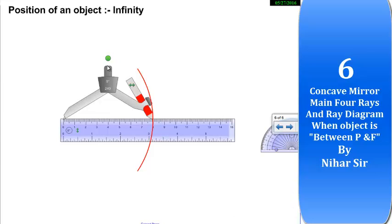Hello friends, let's draw the ray diagram for the concave mirror when object is placed at infinity. We don't know where it is placed but it is at infinity, so we need to draw the ray diagram for the same.